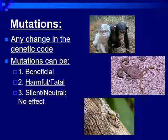Now, mutations, by definition, are any change in the genetic code. Mutations can be one of three types as they occur. They can either be beneficial — so they benefit the organism — they could be harmful, or in some cases even fatal, leading to death. Or, most of the time, what they are is considered silent or neutral, meaning they have no effect at all.